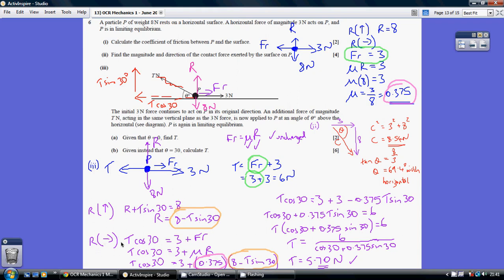Resolving horizontally, we've got going to the left T cos 30, going to the right 3 plus the friction. Friction is mu times R, which is 0.375, the coefficient of friction, times R, which we've just worked out. This allows us to rearrange and work out our tension to be 5.70 newtons.